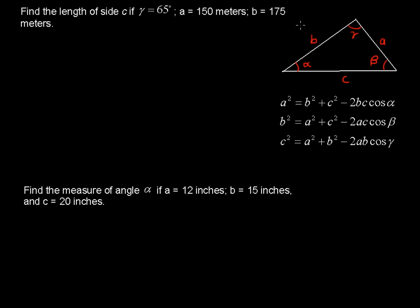Find the length of side c if gamma equals 65 degrees, side a is 150 meters, and side b is 175 meters. So this is a rough sketch of a triangle that has those measurements. It's not to scale. This is just a general triangle with these labels on here.